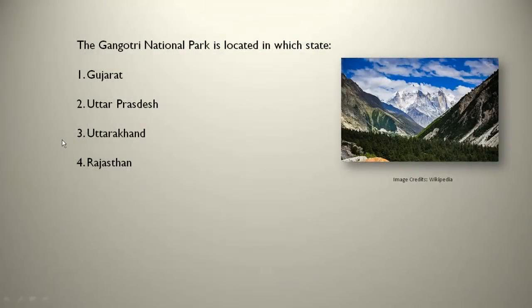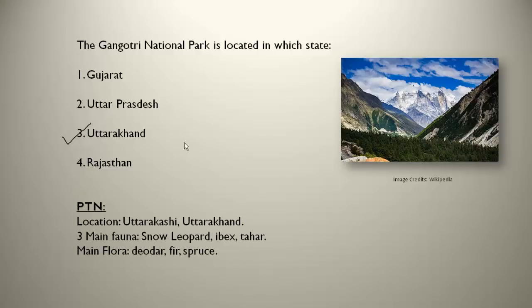The Gangotri National Park is located in which state? Gangotri National Park is in Uttarakhand — you can see it's a very beautiful landscape. Its location is in Uttarkashi district of Uttarakhand. The three main fauna are snow leopard, ibex, and tahar. The main flora are deodar, fir, and spruce trees. Do remember, Gangotri National Park is in Uttarakhand — it's a very important one.